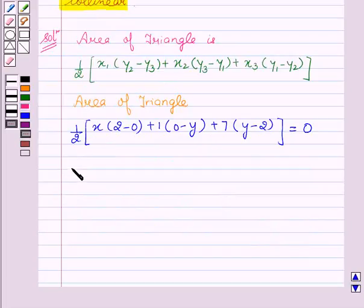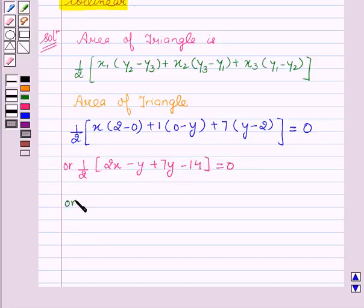This is equal to, or we can say, 1 by 2 (2x minus y plus 7y minus 14) equal to 0, or 2x plus 6y minus 14 equal to 0.